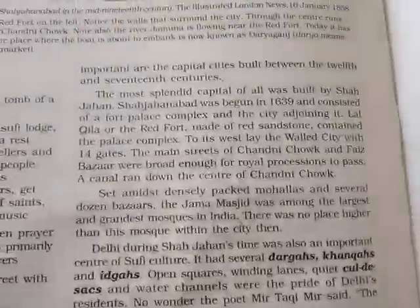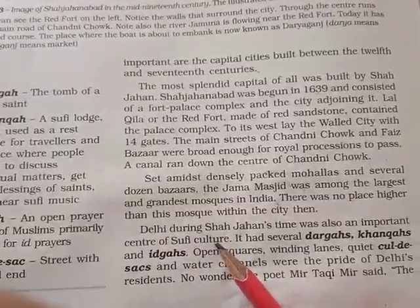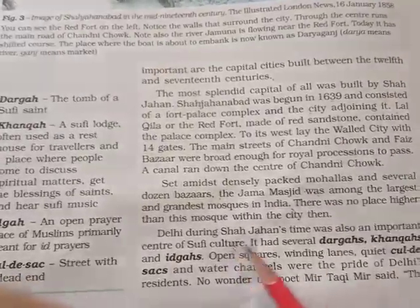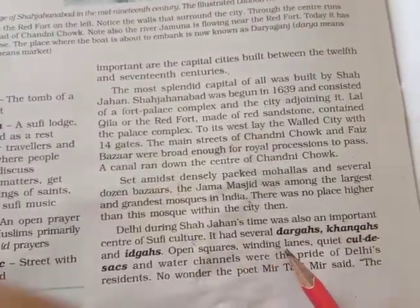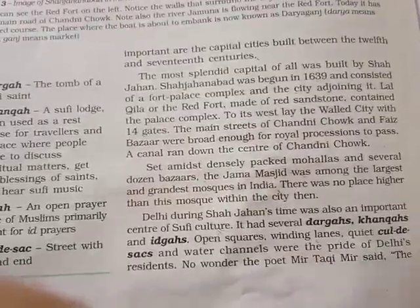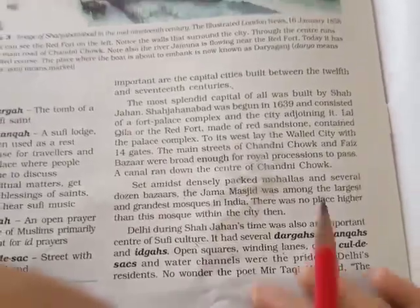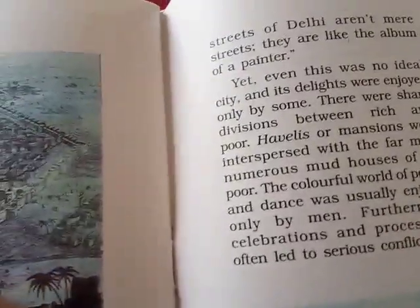During Shah Jahan's time, Delhi was an important center of Sufi culture. There were several dargahs, khans, and open squares. Winding lanes, cultural spaces, and water channels were a pride of Delhi residents. The poet Mir said that the streets of Delhi are not mere streets — they are like the album of a painter.